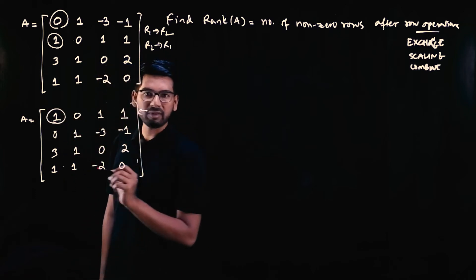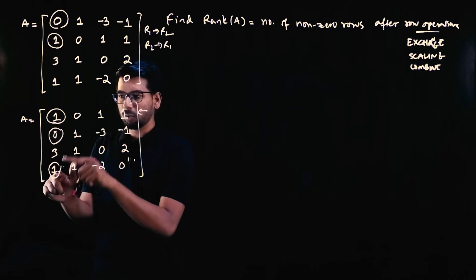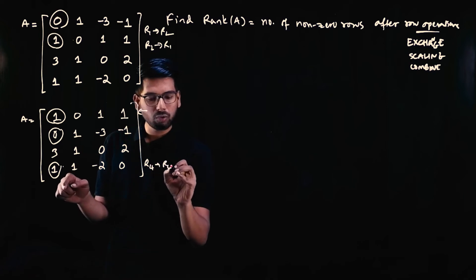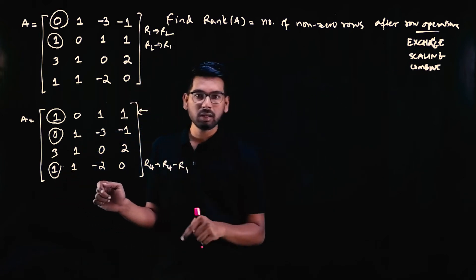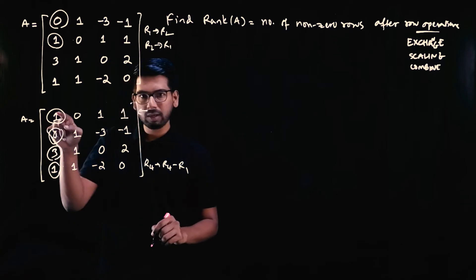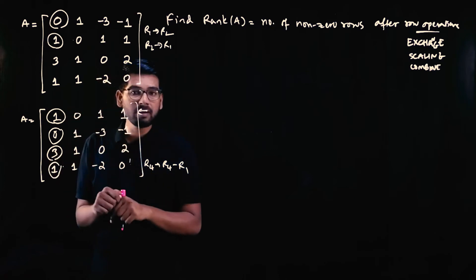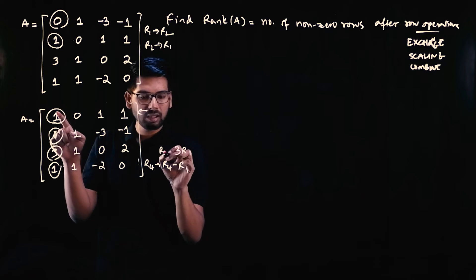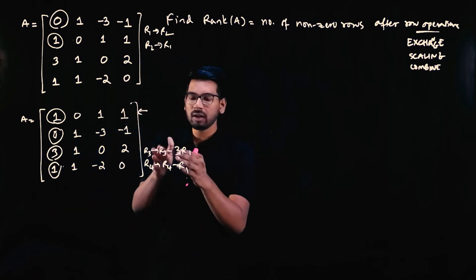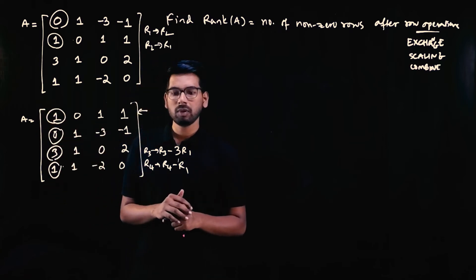Now the first element of the first row is 1, so we use it to make the elements below it zero. The element in row four, column one is 1, so we apply R4 = R4 − R1. We also need to eliminate the element in row three, column one: since it is 3 and the pivot is 1, we multiply the pivot row by 3 and subtract, giving R3 = R3 − 3×R1.